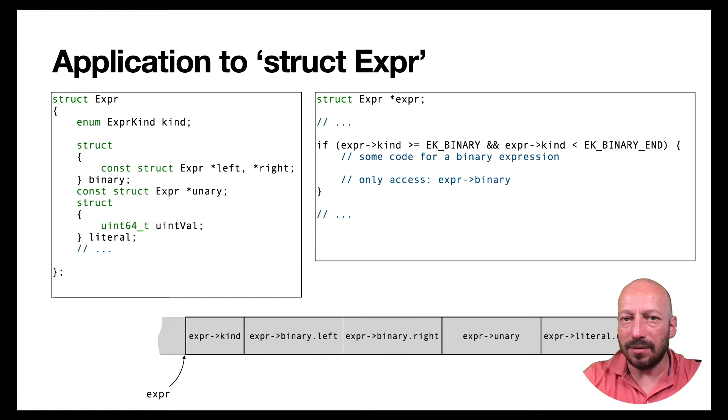And that means that currently we are wasting a few bytes. If we allocate the expression node, then we also allocate memory for all four members. Although we only need two of them. This kind member and then whatever other member should be accessed.